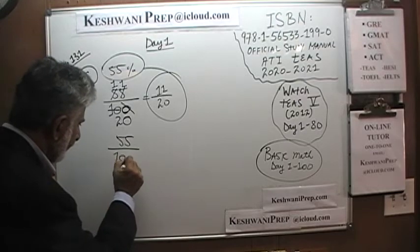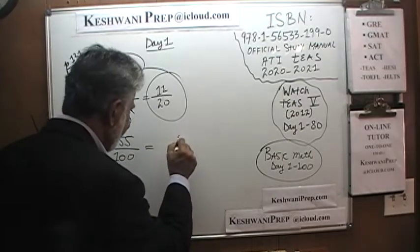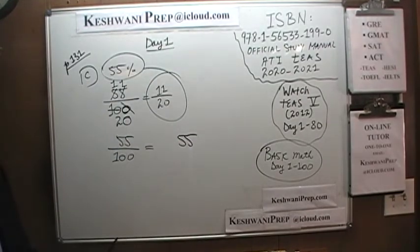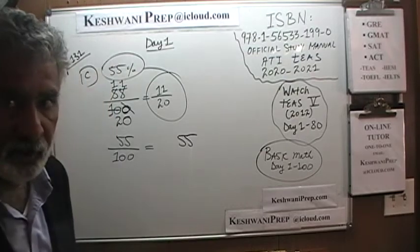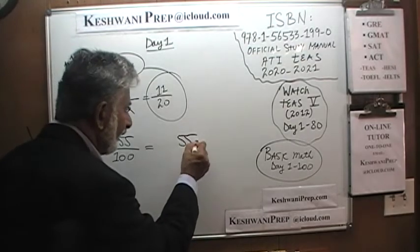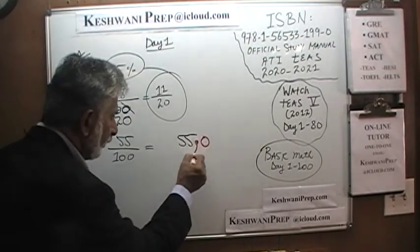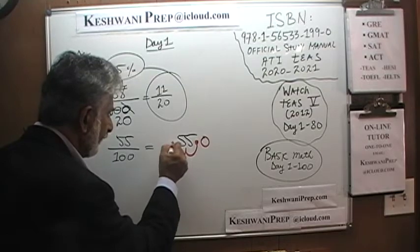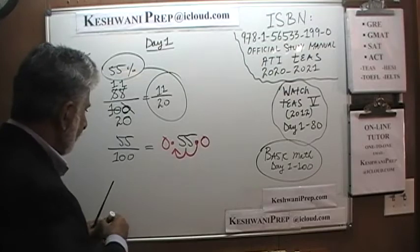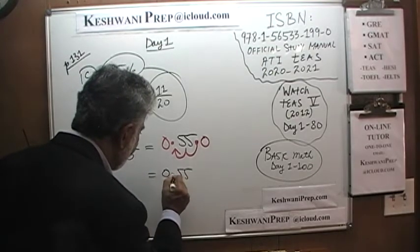For 55% in decimal form: we write 55, find the decimal — it's right after the 5 — and move it two spots to the left: 1, 2. We end up with 0.55.